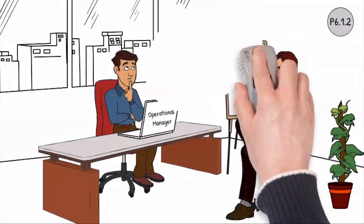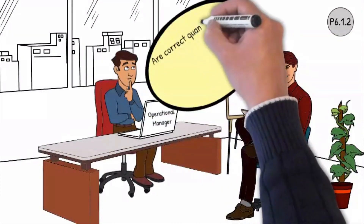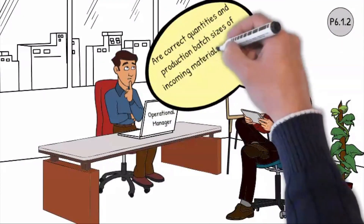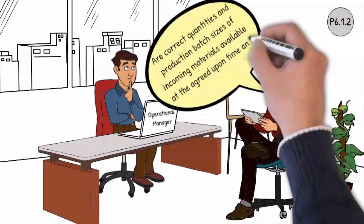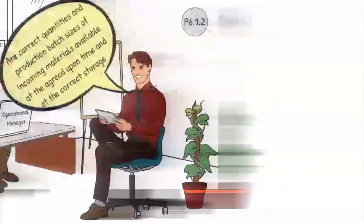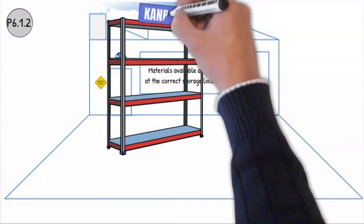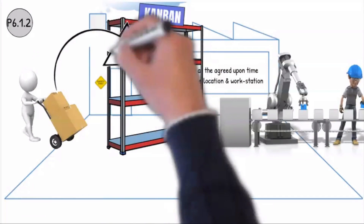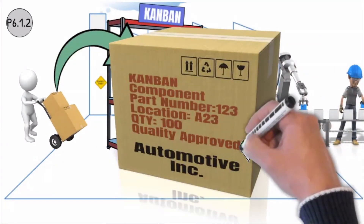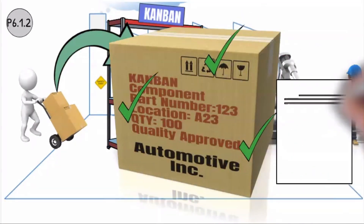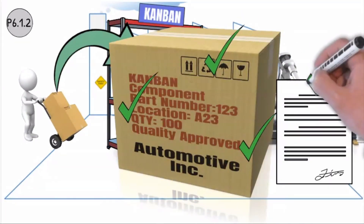Question 6.1.2: Are the correct quantities and production batch sizes of incoming materials available at the agreed upon time and at the correct storage? The incoming components must be delivered to the agreed quality, in the correct quantity and packaging, with the correct documentation, at the agreed time and at the agreed place.